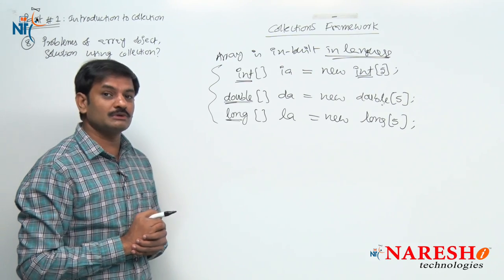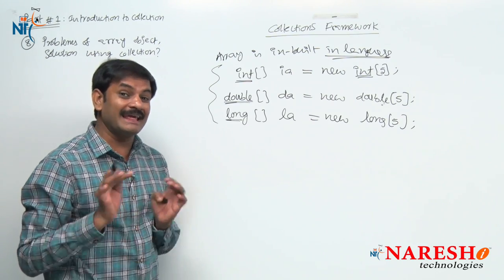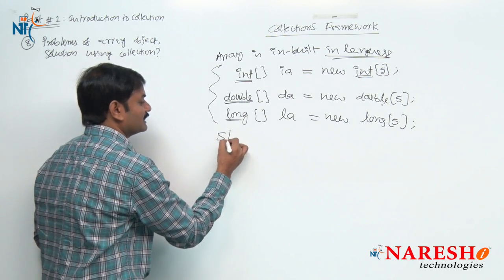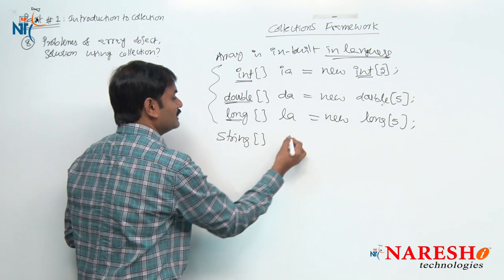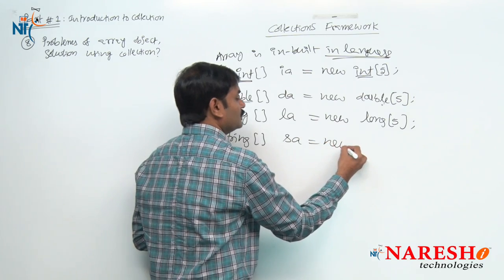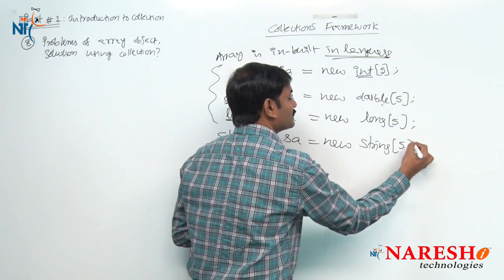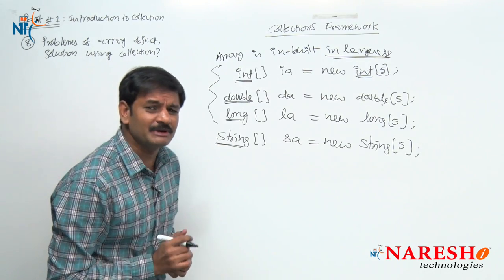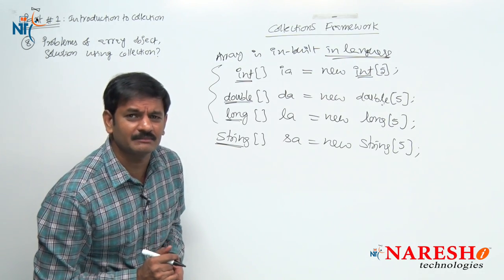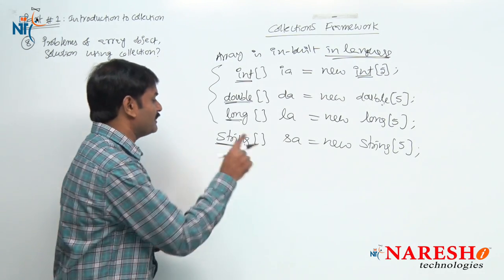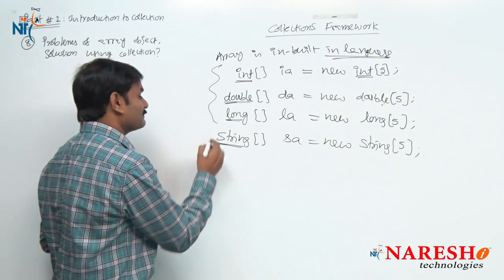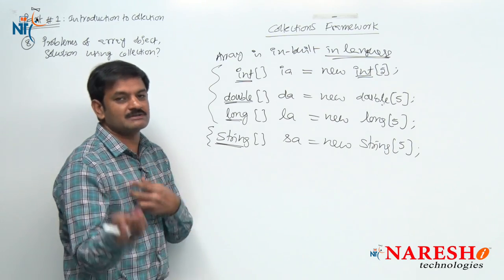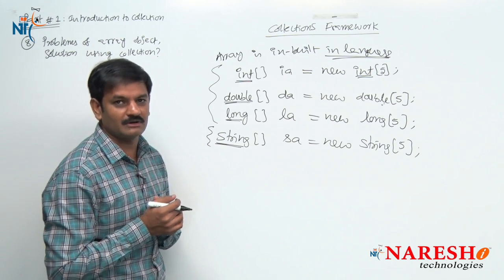I want to store 5 employees' names — name is of type String in Java. So: `String[] sa = new String[5]`. What is String? String is a referenced data type — it is a class. Sun Microsystem has already created a class called String, and we use it straight away.